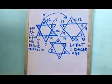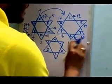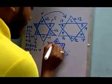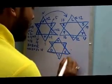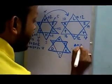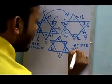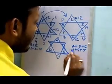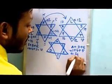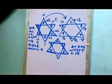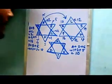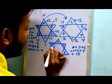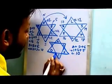Now consider the third diagram. Looking at this particular triangle: A plus D plus E equals 1 plus 4 plus 5, so the total sum is 10. So the target sum for this diagram is 10.